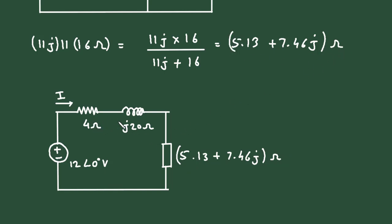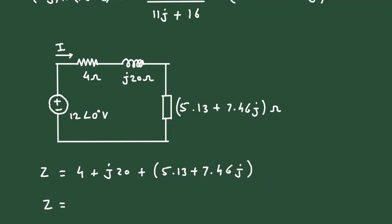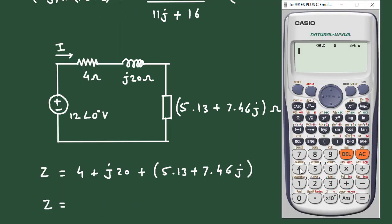Now we can see these three are connected in series. So therefore their total impedance will be Z is equal to 4 + j20 + 5.13 + 7.46j.